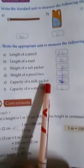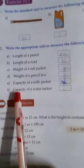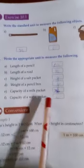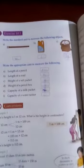Capacity of milk packet will be in milliliters, and capacity of water tank is bigger, so it will be in liters. So this was your Exercise 10.1 that you have to do on the book.